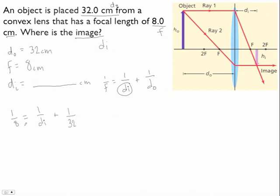Fractions are kind of annoying to deal with. Decimals are a little bit easier. So I'm going to convert all of these to decimals. So 1 divided by 8 is 0.125 equals 1 over di, that still hasn't changed, plus 1 divided by 32. You get like 5 decimal places, but I'm going to stop at 3 because this number has 3. So I'm just going to have 0.031 centimeters.